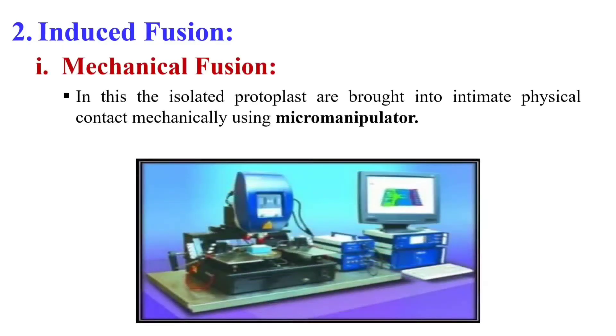Next, induced fusion. Here we induce the protoplasts to fuse with each other. In the case of mechanical fusion, we use a specific instrument generally known as a micromanipulator or perfuser micropipette. Under the microscope, using this micromanipulator, we bring the two protoplasts very close to each other so that they can fuse. However, there is a low success rate because it is a mechanical method and the risk of damage is always there.